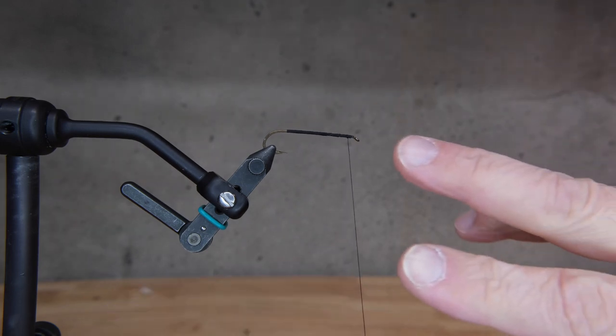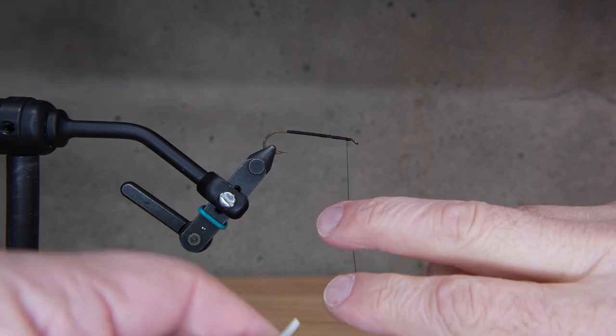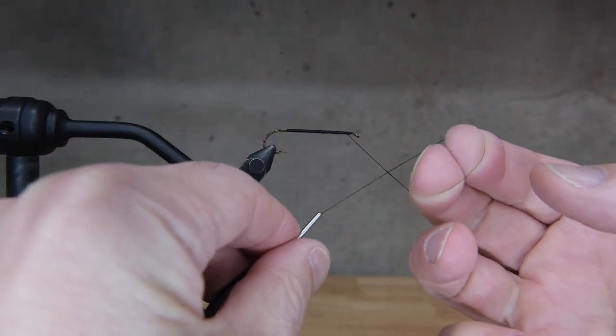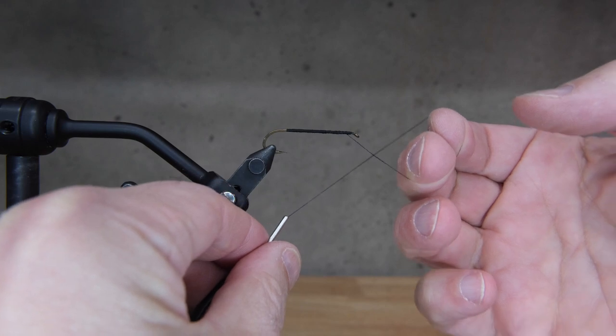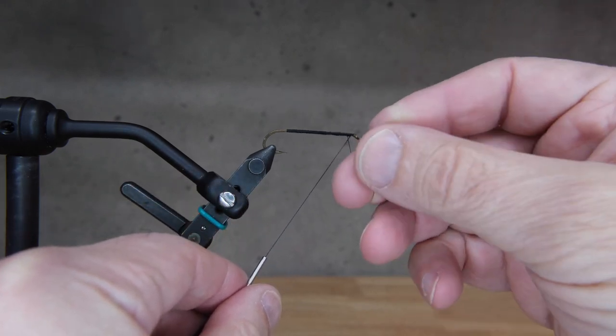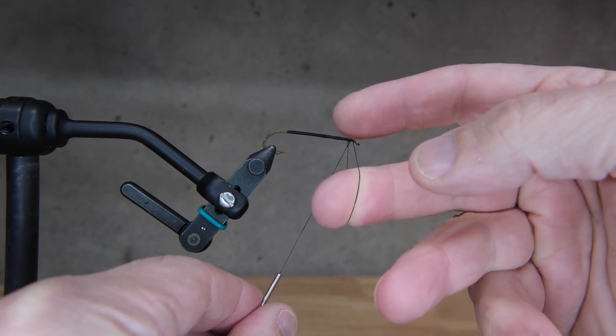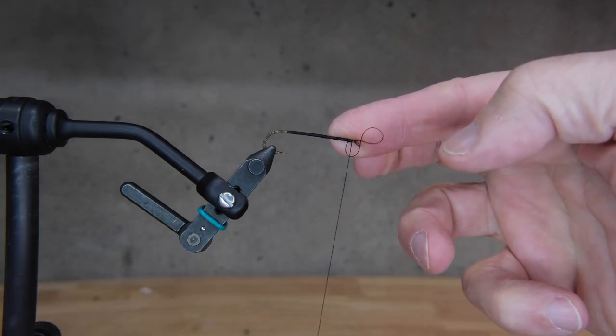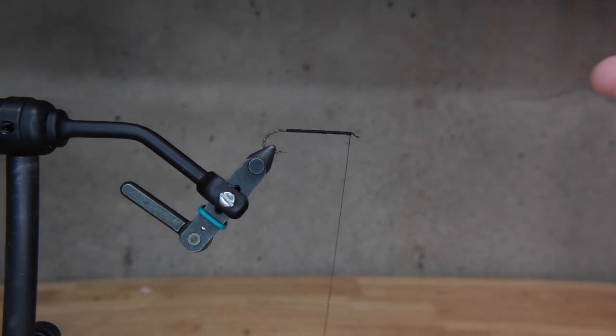So lay your two fingers over the thread like this, wrap it around your fingers to form an X. Bring that X to the other side of the hook, lay it down, pull one finger out, place it on there, half hitch.